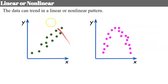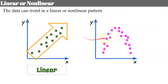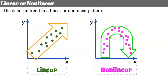We could also possibly have a trend in the data that is linear or nonlinear. Here we have a linear pattern because we could draw a line to show the trend of the data. Over here we have an arc or curve to our data. Later in Algebra 1 you will learn that this is a quadratic trend, and this is what we call nonlinear.